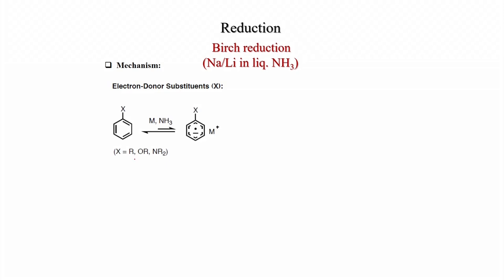With electron-donating groups such as alkyl, OR, or NR2, treatment with sodium or lithium in liquid ammonia generates the radical anion. Ortho protonation then occurs, and this is the rate-limiting step. The anion stays at the ortho position of the electron-donating group, which is why ortho protonation happens.